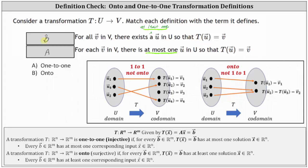Let's take a look at the mappings shown below. The first mapping is one-to-one, not onto, and the second mapping is onto, not one-to-one. For a one-to-one transformation, there must be at most one vector u that is a solution to T of u equals v. Looking at the codomain of the first mapping, three of the four equations have one solution: the first equation's solution is vector u₁, the second is vector u₂, and the fourth is vector u₄. For the third equation, there is no solution — no vector u₃ in the domain. So there are either zero or one solutions to each equation, which satisfies the definition for one-to-one of having at most one solution.